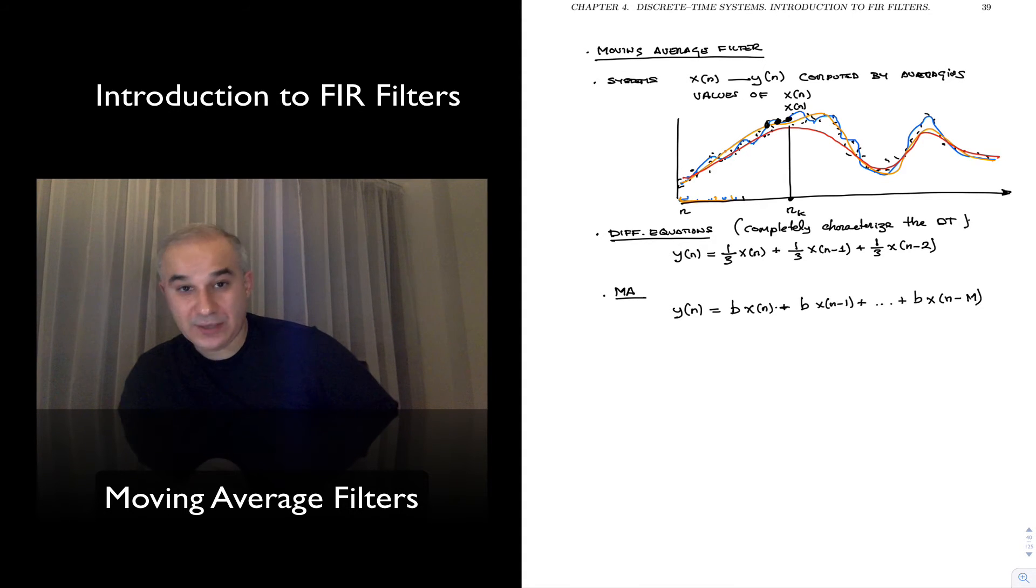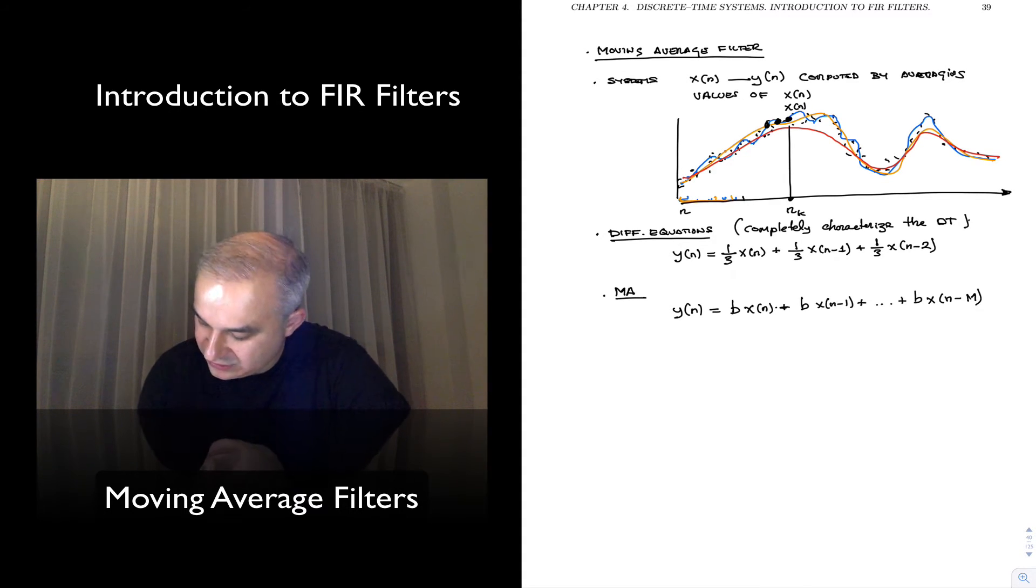And all these coefficients are the same in the case of the moving average. It will be 1 over the window length that you have. Since we are starting at 0, it will be m plus 1. So in general, in this case, b is going to be 1 over m plus 1, the window length.